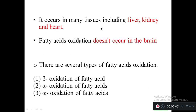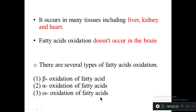Beta oxidation occurs mainly in tissues including liver, kidney, and heart. Fatty acid oxidation does not occur in the brain. There are several types of fatty acid oxidation: the first type is beta oxidation, the second is alpha oxidation, and the third is gamma oxidation. But the major part of fatty acid oxidation comes from beta oxidation, hence it is very important.